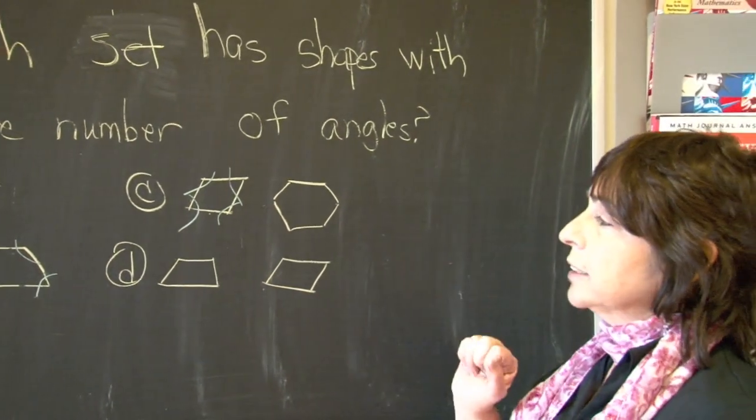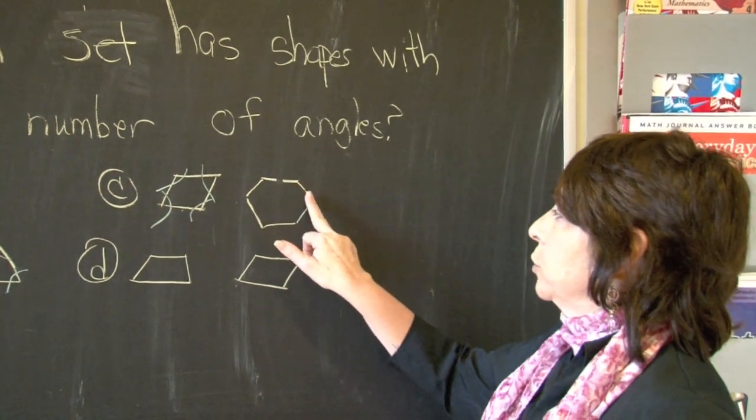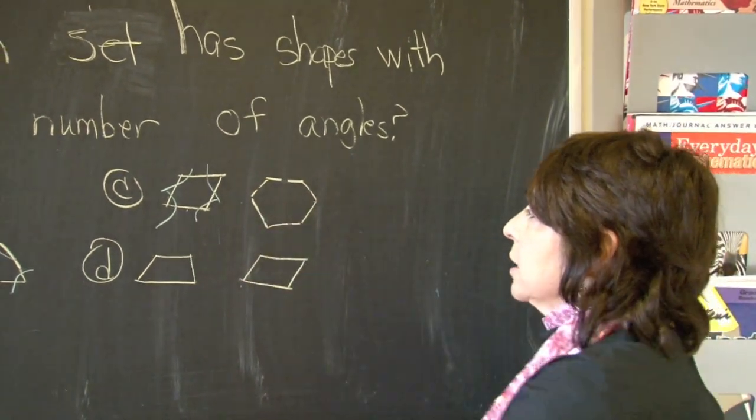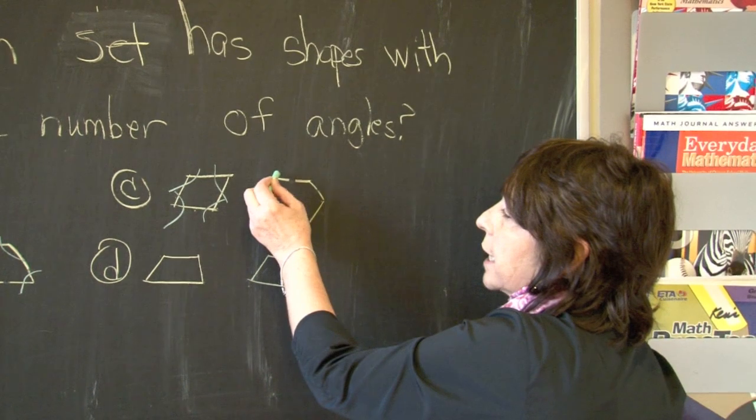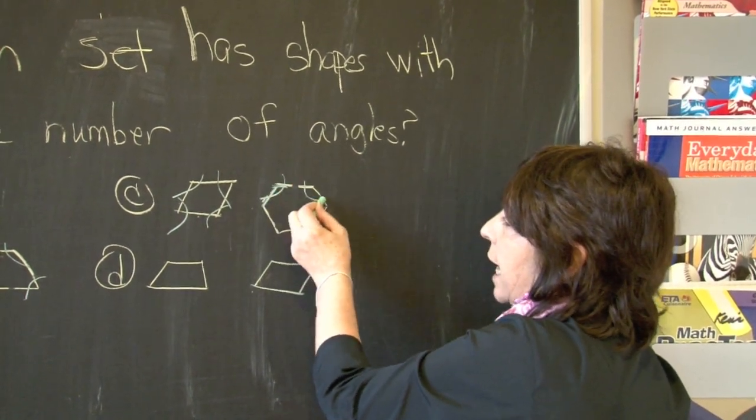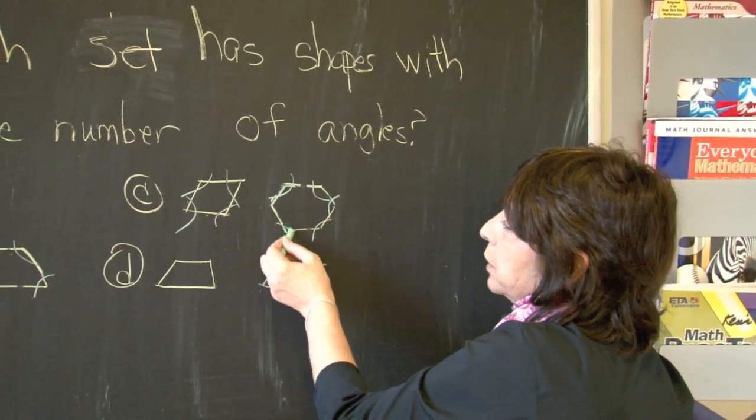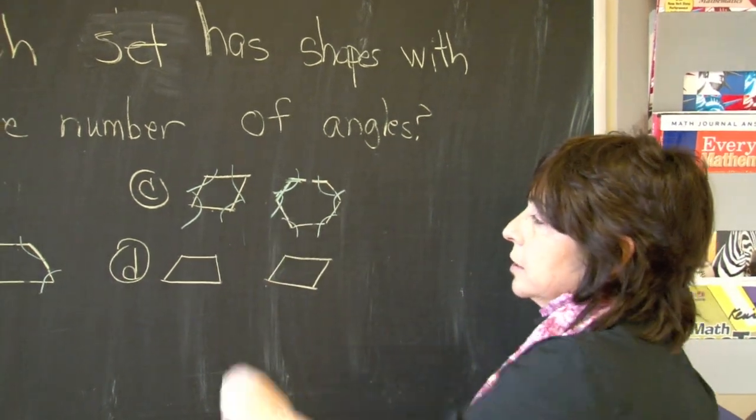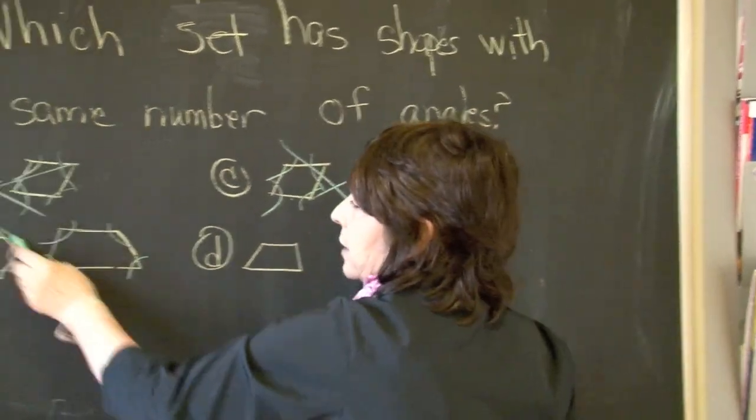And once again, we have a hexagon with six sides. One, two, three, four, five, six. So where those line segments meet, it forms an angle. So this shape will have six angles. So that cannot be the answer as well.